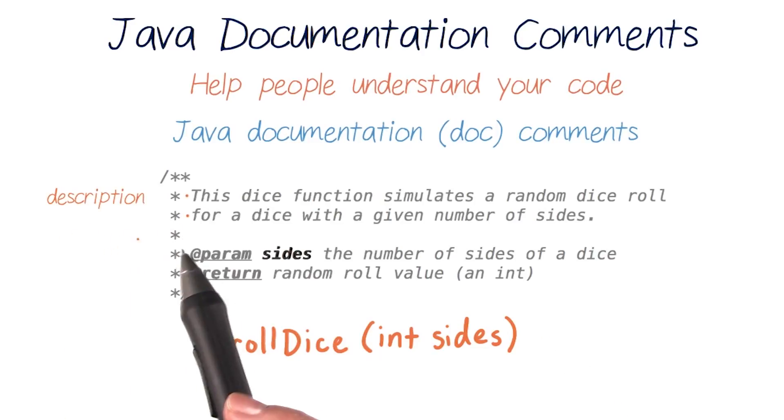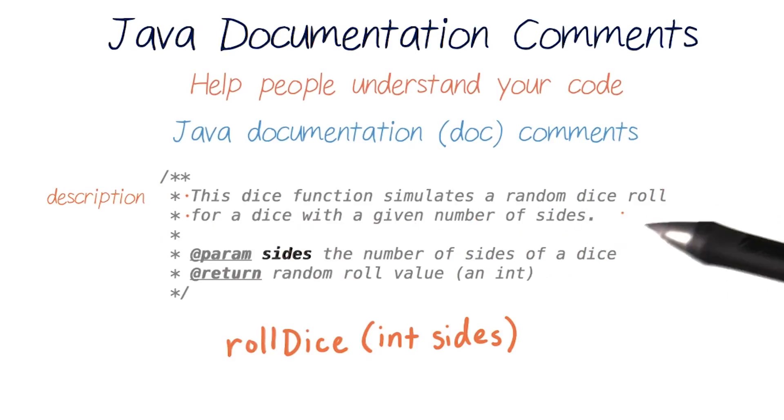The first part of the comment gives us a general description of the function that tells us that this returns a random dice roll, given the number of sides of a dice.